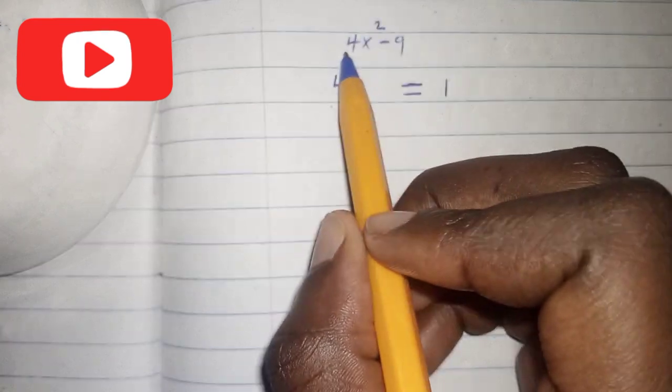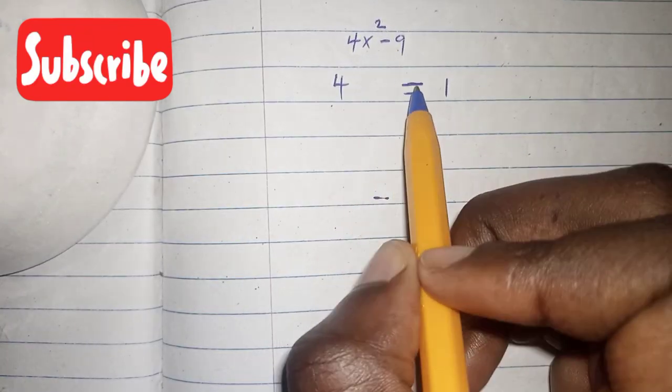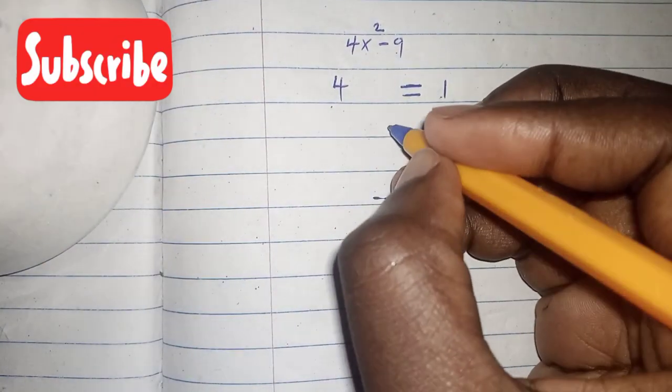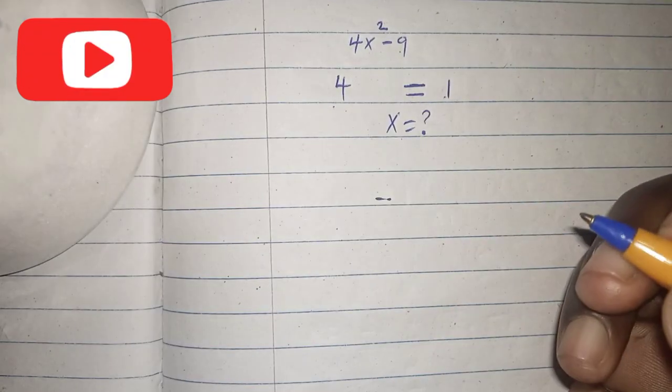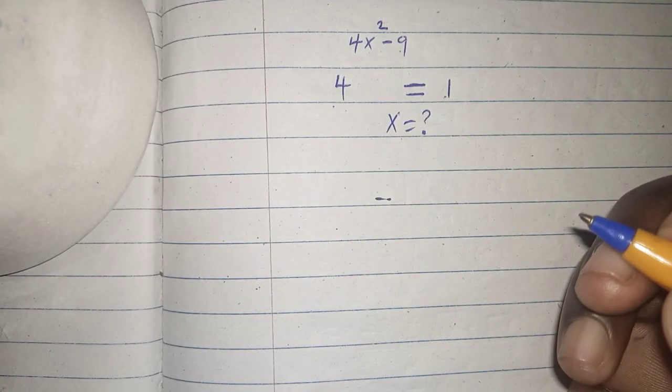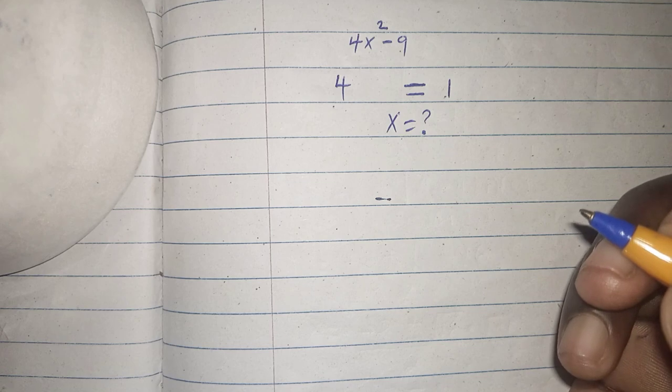4 to the power of 4x squared minus 9 equals 1. So what is the value of x? Before we begin, remember to like, subscribe, and comment down below.